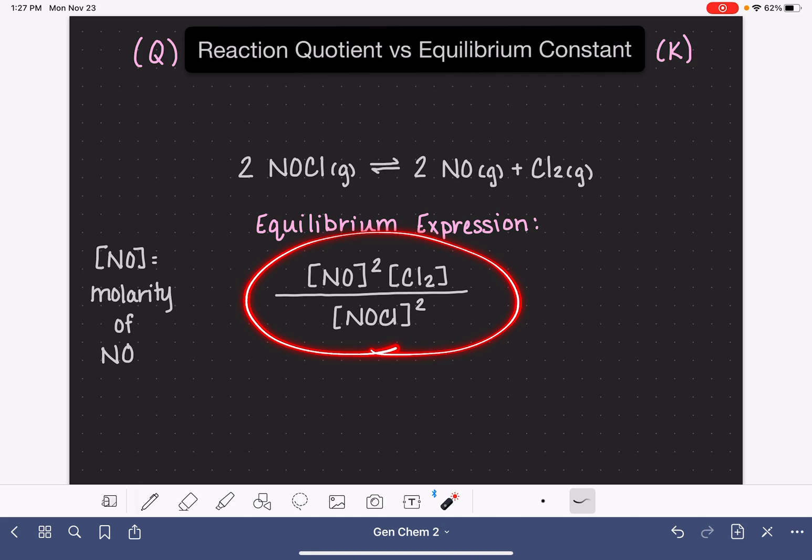To calculate or to do math with the equilibrium expression, we would need to know what the concentrations are of each one of these things, and then we would plug those concentration values into the equilibrium expression, and we would get some sort of number. And this is where the conversation takes us to reaction quotient versus equilibrium constant.